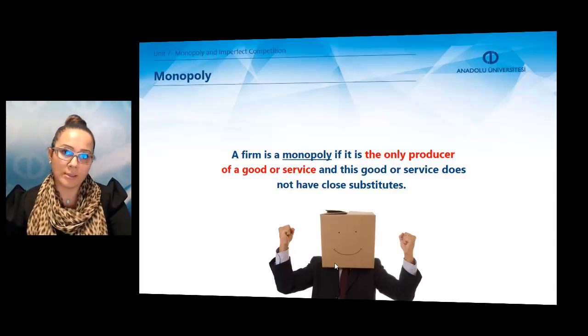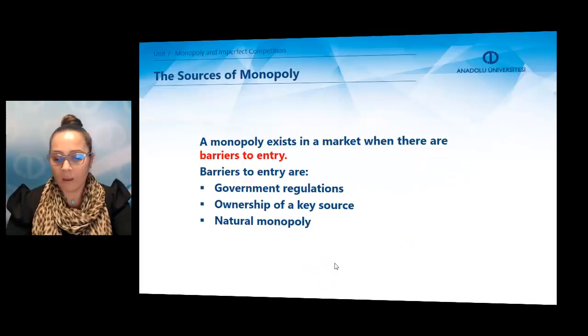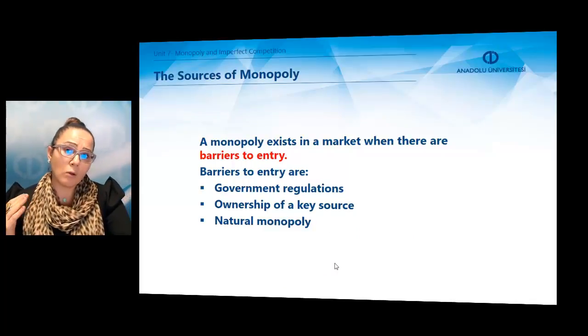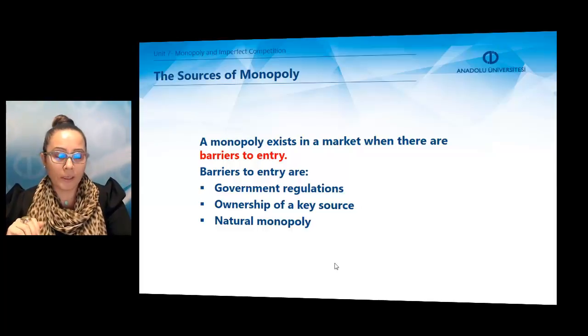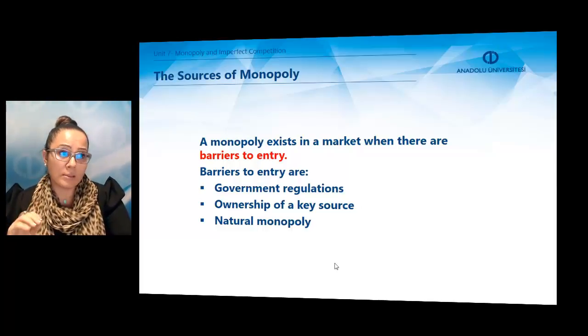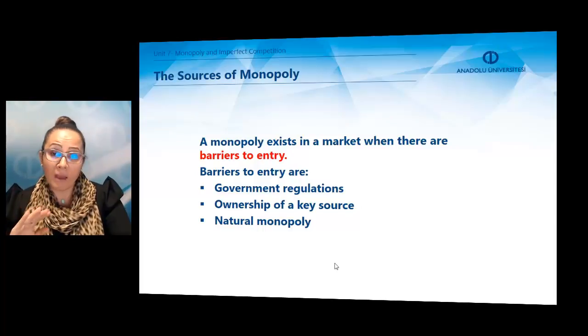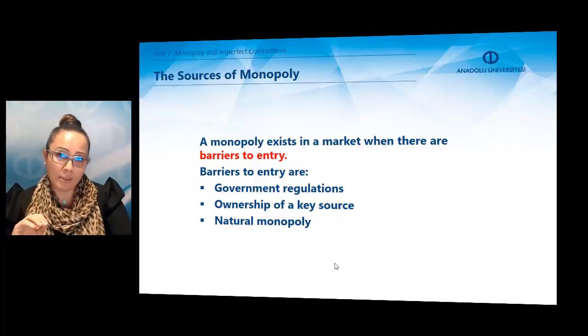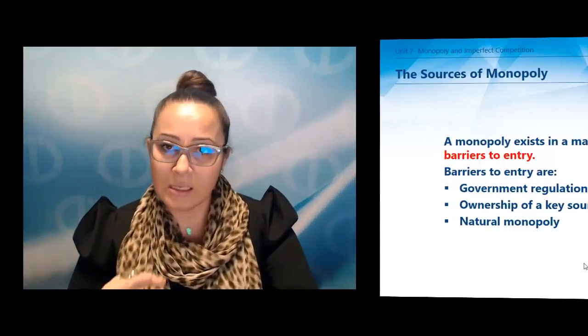When we talk about the sources of monopoly, the first thing to consider is barriers to entry. A monopoly exists in a market when there are barriers to entry. These barriers include government regulations, ownership of a key source, and natural monopoly.